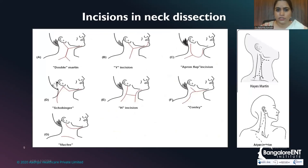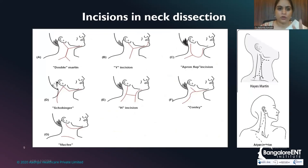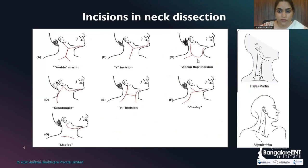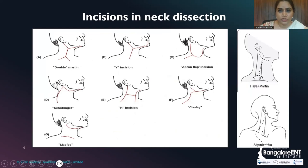Level 5 usually reflects nasopharynx, thyroid, esophagus, lung, and breast metastasis. These are the incisions of neck dissection — the double Martin incision, Y-shaped incision, apron flap incision, Schobinger's incision, H incision, Connelly's incision — but more often than not we prefer the hockey stick incision, the inverted hockey stick, or MacFee's incision.